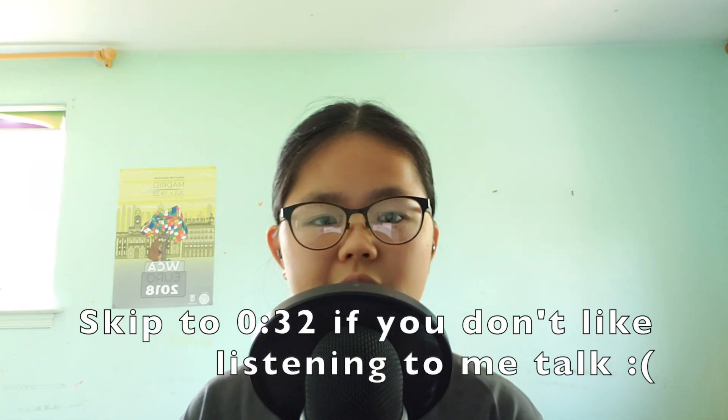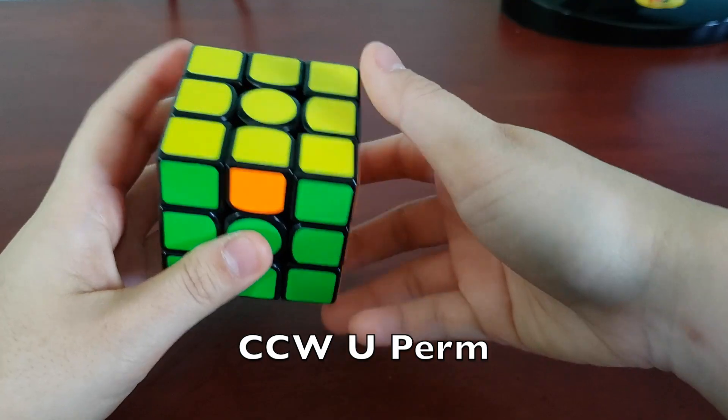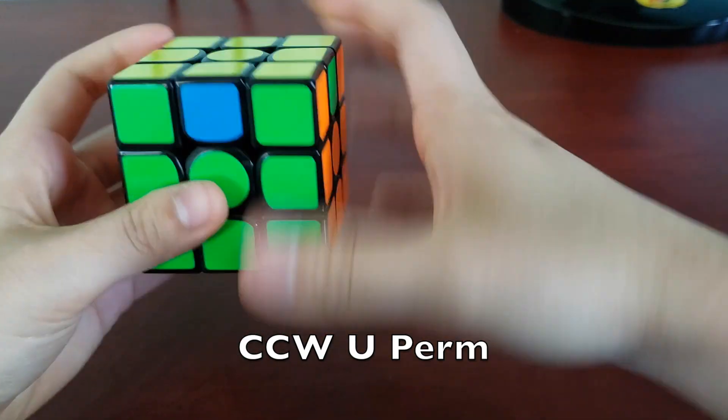You probably know either the MU u-perms or the ones that begin with R's, but this algorithm is a quirky way to execute the algorithm that you probably already know. I actually use the MU and R u-perms depending on how my OLL ends and what orientation I get the u-perm in, but when I get the counterclockwise u-perm at this angle, this is the algorithm that I use.